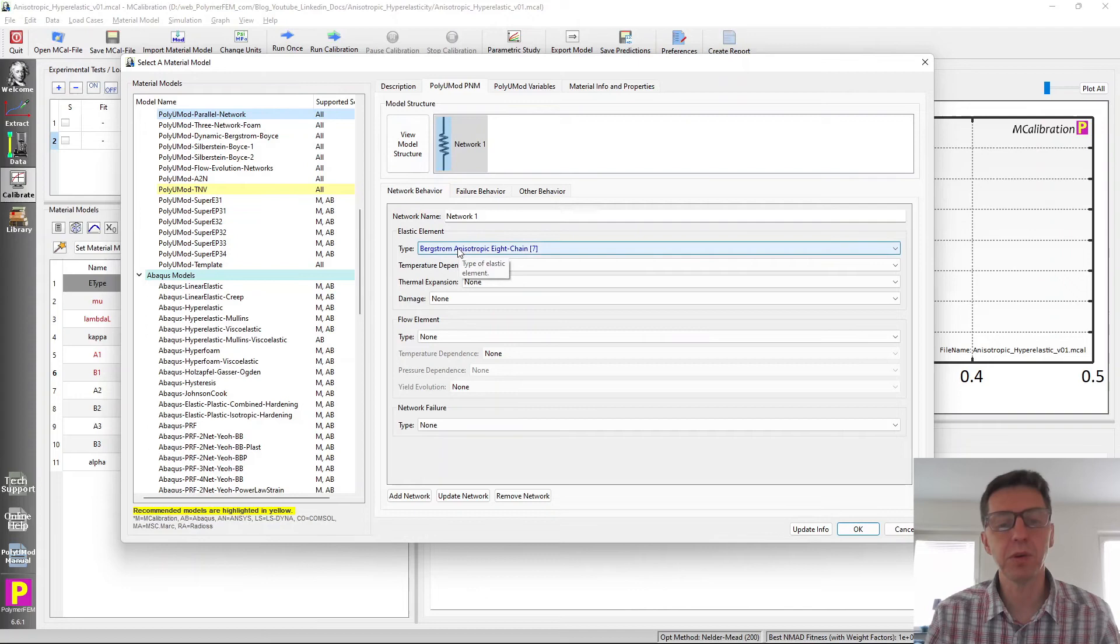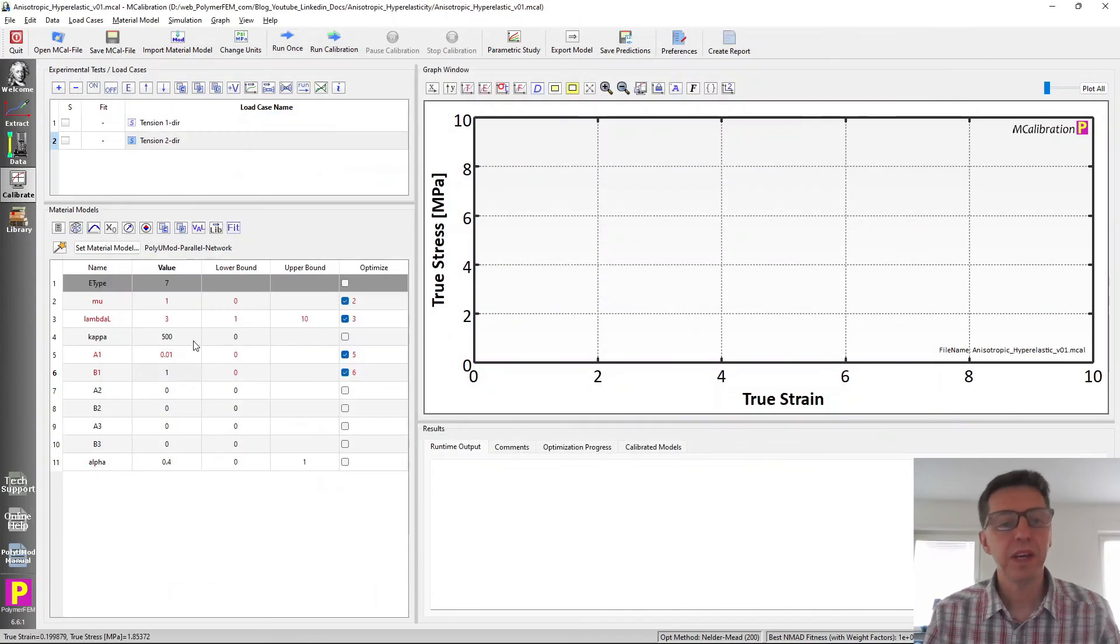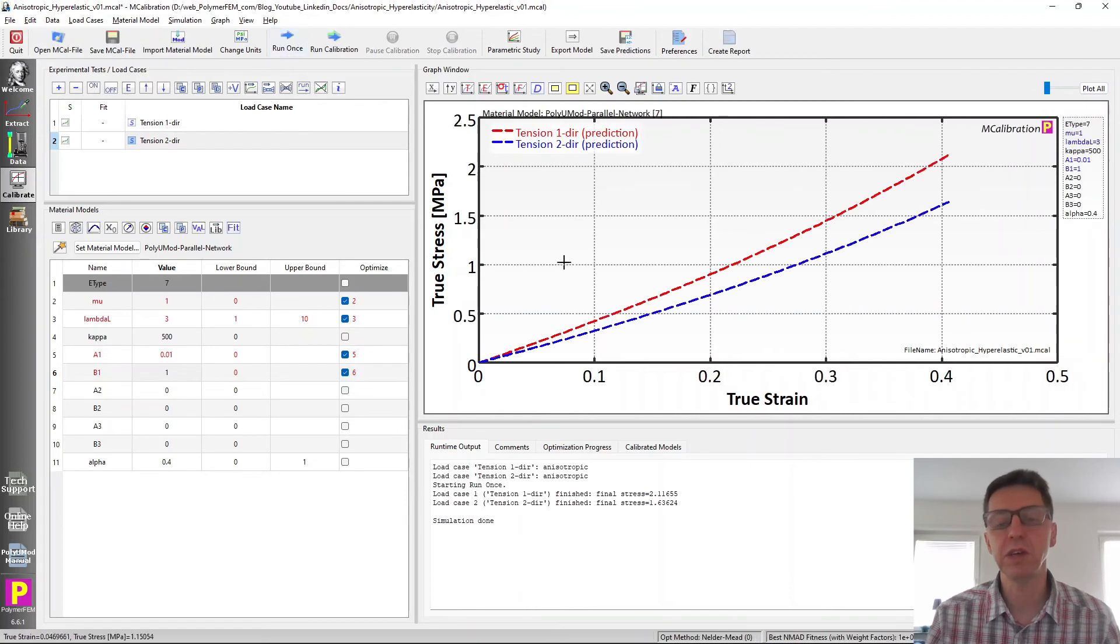It's the Bergstrom-Boyce 8-chain model. The first three parameters here are the traditional isotropic Arruda-Boyce parameters. And then we have the stiffness parameters in the three directions. The only non-zero ones here are in the one direction, A1 and B1. So if I run this once we'll see that we get a stress that's higher in the one direction than the two direction.